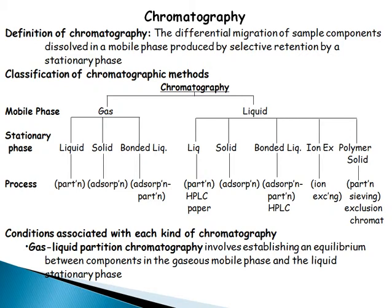Classification of chromatography by phase: gas and liquid. In gas chromatography, the mobile phase is gas, and the stationary phase can be liquid, solid, or bonded. In liquid chromatography, the stationary phase can be liquid, solid, bonded, ion exchange, or polymer solids.